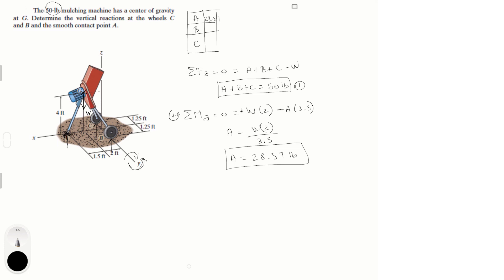Now, we know that the sum of the moments, assuming counterclockwise is positive, the sum of the moments at X is equal to 0, right. And I'm doing the sum of the moments at X because that cancels out the reaction at A and it cancels out the weight, so I know that the reaction at C times 1.25 because that's the distance where C is applied to the XZ plane minus B times 1.25.